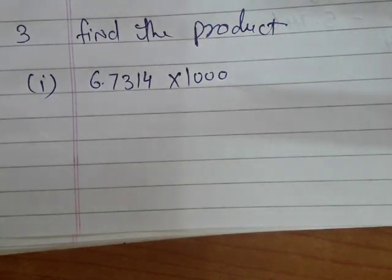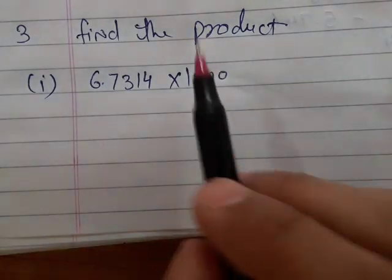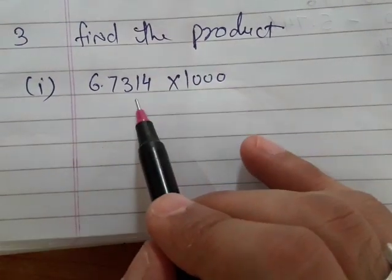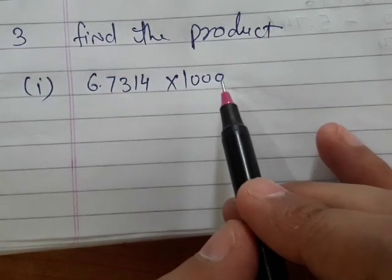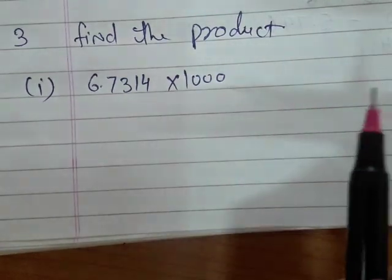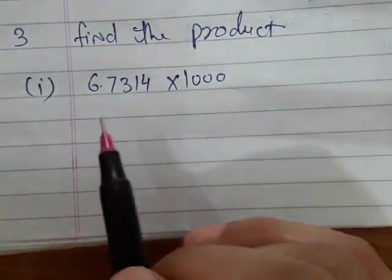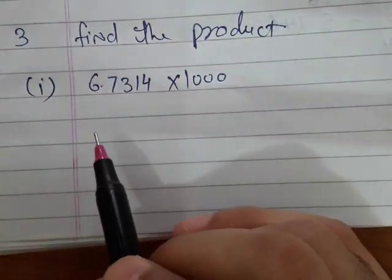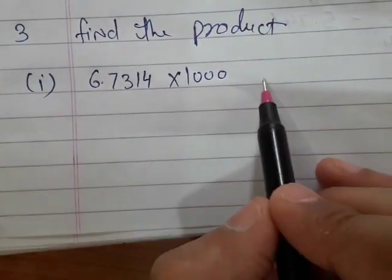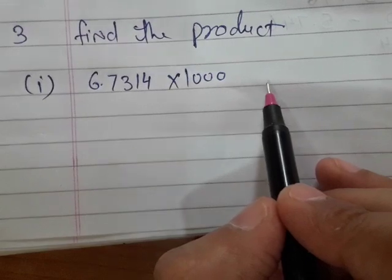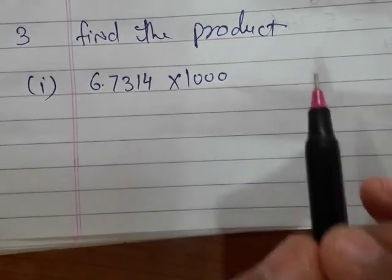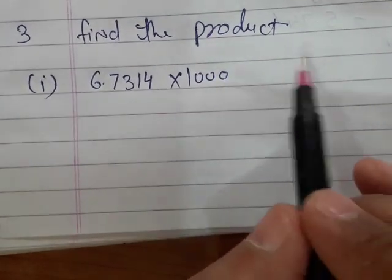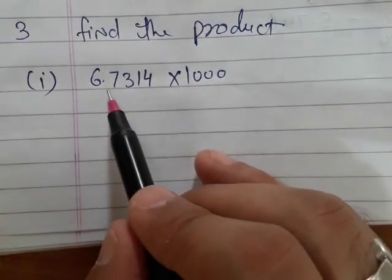First part of question number 3: find the product of 6.7314 multiplied by 1000. The third rule is about multiplying a decimal by 1000 — the decimal point is shifted to the right by 3 digits.